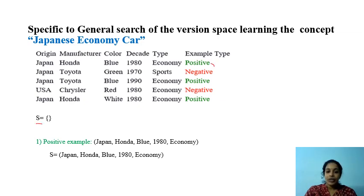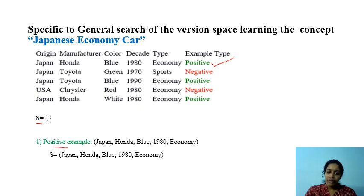Initially we got a positive example: Japan, Honda, Blue, 1980, Economy. We have to check whether we can accept this positive example. We found we cannot, so we have to make changes accordingly.